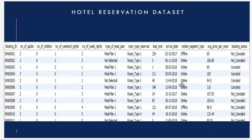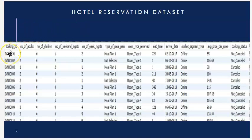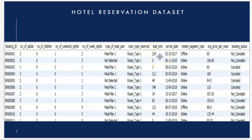First let me introduce you to the dataset. As you can see, we have 15 columns with different information: starting from booking ID, which are individual reservation codes, number of adults, children, number of weeknights, weekend nights, preferred type of meal, reserved type of room, lead time, arrival date, market segment type (online/offline), average price per room, and booking status.